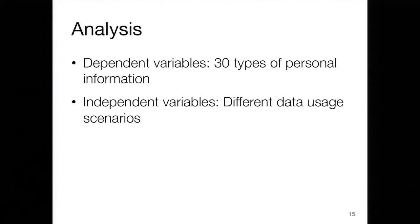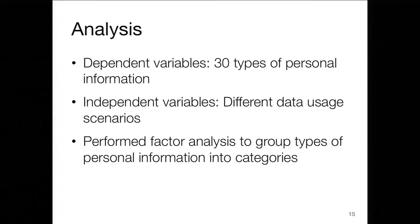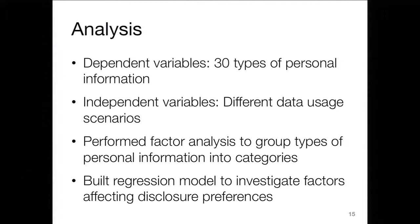We did a fairly complicated analysis. We had 30 types of personal information as our dependent variables, and different data usage scenarios as our independent variables. We did a statistical factor analysis to group the different types of personal information into categories so we could see clusters of information and how people felt about them. Then we built a regression model to investigate what factors would affect disclosure preferences — which is just a fancy way of saying we did a lot of statistics.